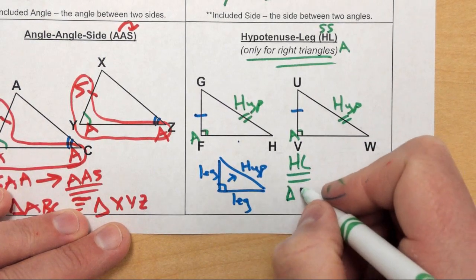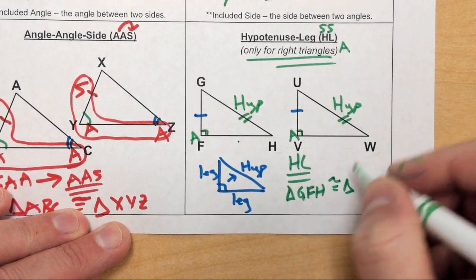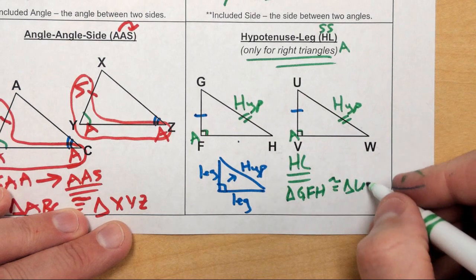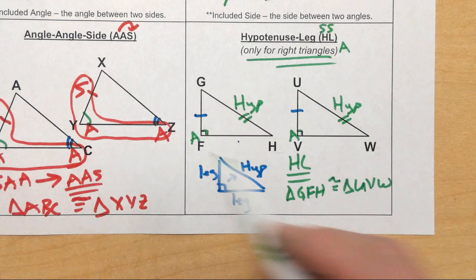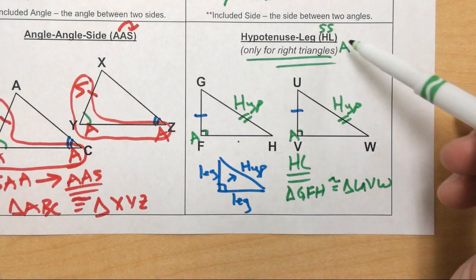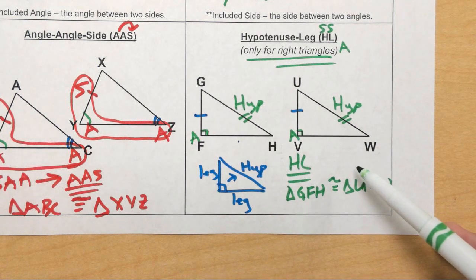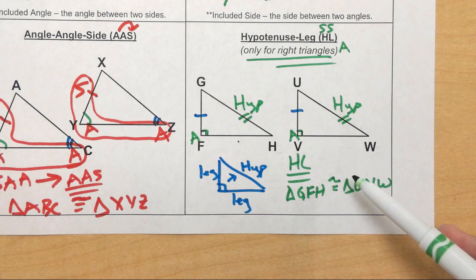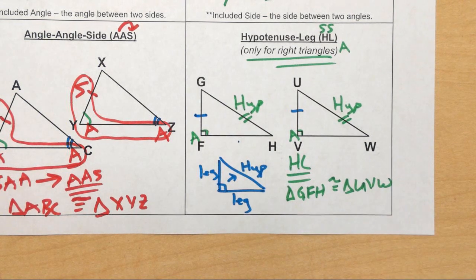So I could say triangle GFH is congruent to triangle — G matches U, F matches V, and H matches W — by the Hypotenuse-Leg theorem. We'll talk about why it's called Hypotenuse-Leg maybe in class. Hopefully this all makes sense, and if you have any questions you can ask the sub to rewind this. I have another video going over this kind of stuff on Google Classroom if you want to review it. Beyond that, I'm going to stop this video and do another video going over some practice problems. Have a good day. Bye.